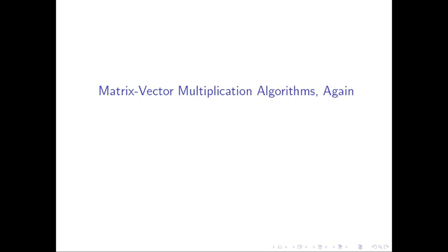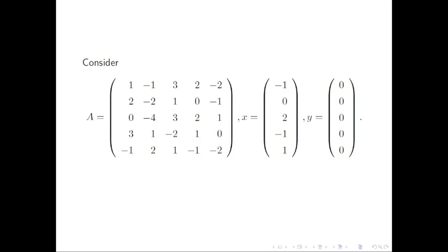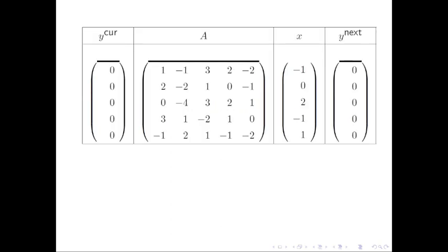In particular, we will be interested in how to multiply with a triangular matrix and a symmetric matrix. Let's start with a concrete example: a 5 by 5 matrix A multiplying a vector of size 5. We first re-examine the algorithm that computes A times x as dot products of the rows of A with the vector x. Here is how the algorithm proceeds for our concrete example.